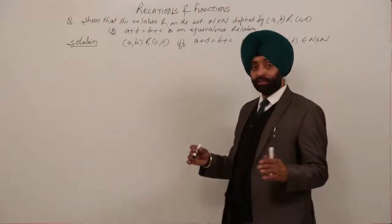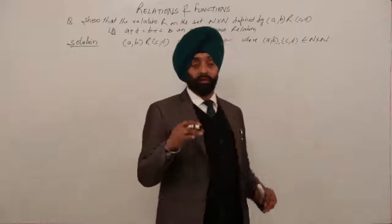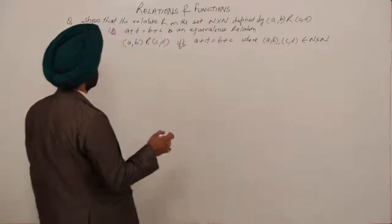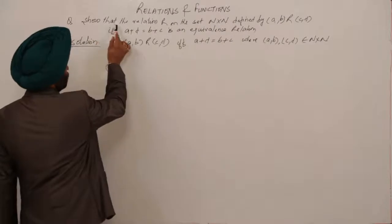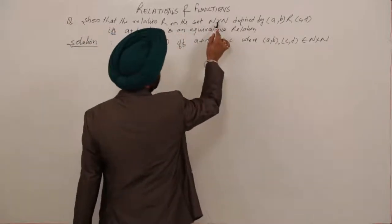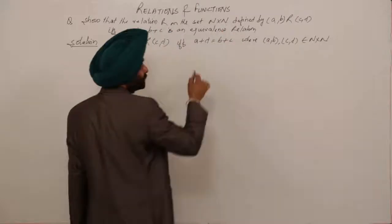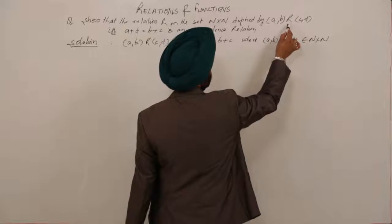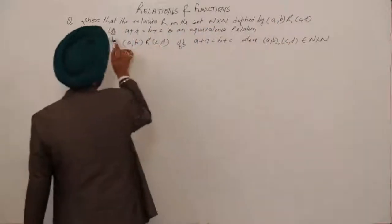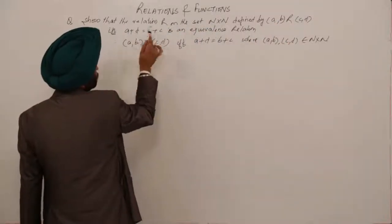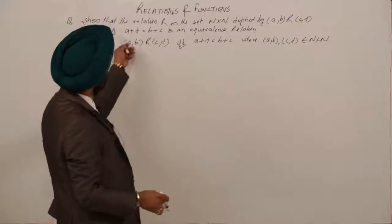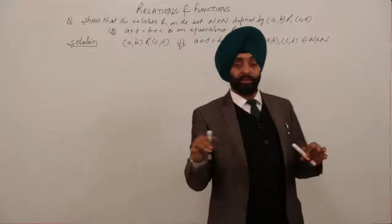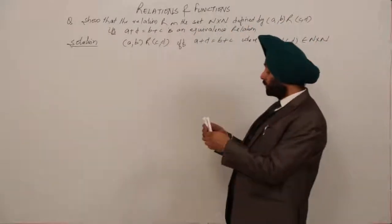Let's move with an example — a question from the examination point of view. The question is: show that the relation R on the set N×N, where N is a natural number, is defined by (a,b) R (c,d) if and only if a+d = b+c. This is the condition they have given: a+d = b+c.